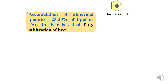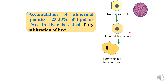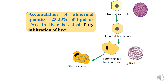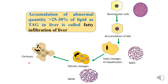This is a normal liver cell, and with the accumulation of fats the liver cells undergo some changes — the shape of the hepatocytes also changes — and these are called fatty changes in the hepatocytes. These fatty changes lead to increased lipids in the hepatocytes, known as non-alcoholic fatty liver. With further accumulation there are fibrotic changes in the cell, known as non-alcoholic steatohepatitis. As the fibrotic changes advance it leads to cirrhosis, causing permanent damage to the liver cells.